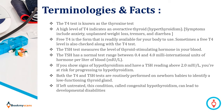The TSH test measures the level of thyroid stimulating hormone in your blood. The TSH has a normal test range between 0.4 and 4.0 milli-international units of hormone per liter of blood. If you show signs of hypothyroidism and have a TSH reading of about 2.0 milli-international units per liter of blood, you are at risk for progressing hypothyroidism. Both the T4 and TSH tests are routinely performed on newborn babies to identify a low-functioning thyroid gland.